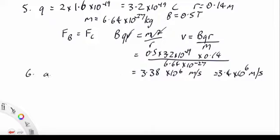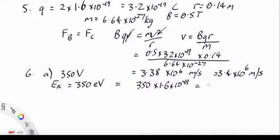Now, number 6. The first bit: we've got a voltage of 350 volts. That means our energy, the kinetic energy it will have, is 350 electron volts. Now, to turn that into joules, we have to get a smaller number of joules, so we are multiplying by Q. So we have 350 times 1.6 by 10 to the minus 19, so we have 5.6 by 10 to the minus 17 joules.